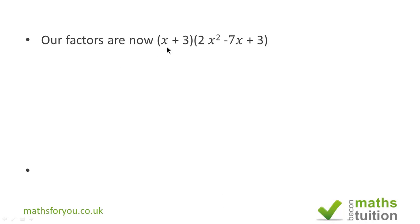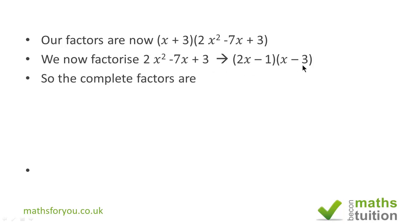Our factors are now (x + 3) into 2x² - 7x + 3. We need to factorize the quadratic function, and when we factorize the quadratic function we have (2x - 1)(x - 3). So the complete factors will then be (x + 3)(2x - 1)(x - 3).